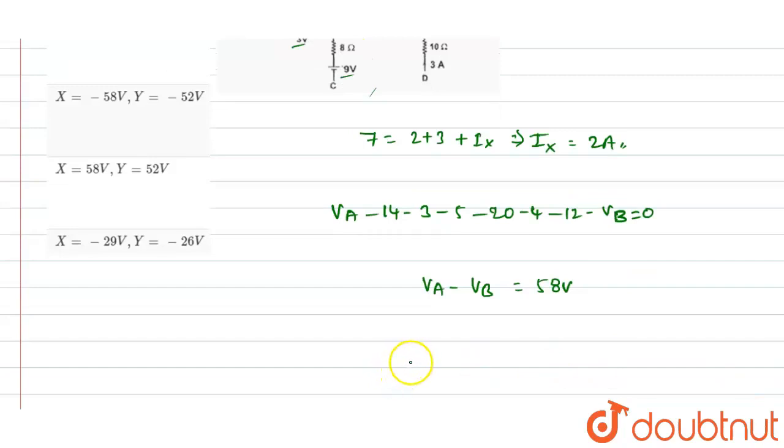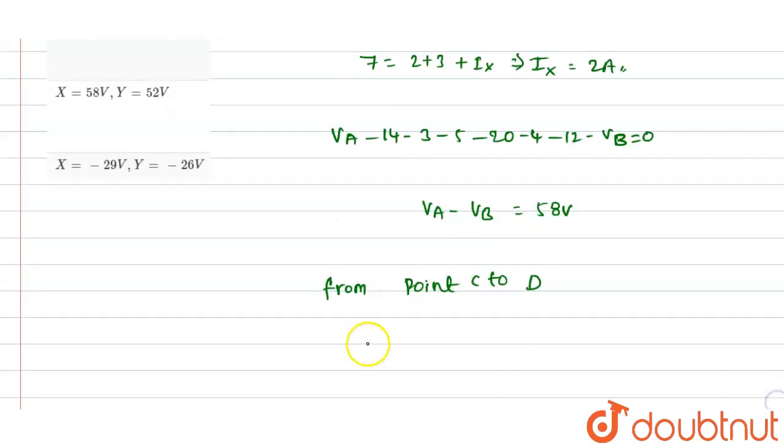And now by using Kirchhoff's laws for the point c to d, so from point c to d we will write Vc minus 9 plus 8 into 2 minus 5 minus 20 minus 4 minus 30.